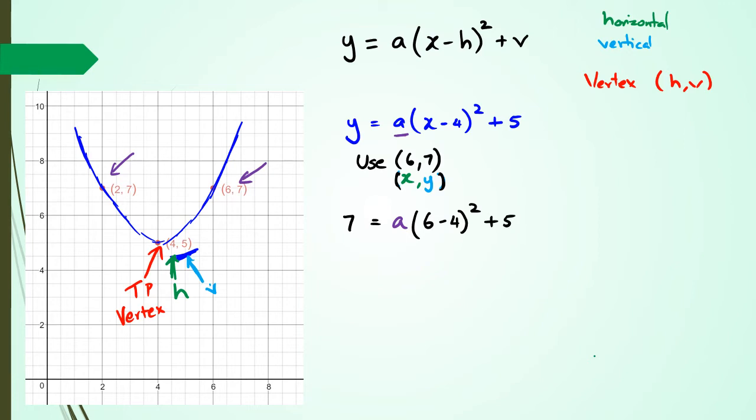Now it's a matter of rearranging. So I've got to get rid of the plus 5 first. When I bring the plus 5 to the other side, it ends up being minus 5. And that equals a multiplied by 6 minus 4 is 2, so we've got 2 squared. Then we've got 7 minus 5 is 2, and 2 squared is 4. So we've got 2 equals a times 4, and then we can say a is equal to 2 divided by 4. So in this case, a can be written as half or 0.5.